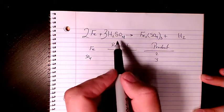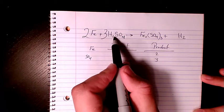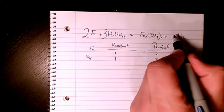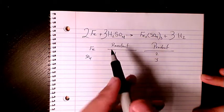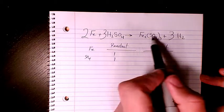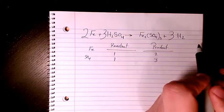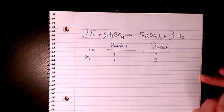Now everything is balanced. Fe is balanced, S is balanced, oxygen is balanced, and hydrogen is balanced as well. I hope you enjoyed this video. Please leave me a comment if you have any questions.